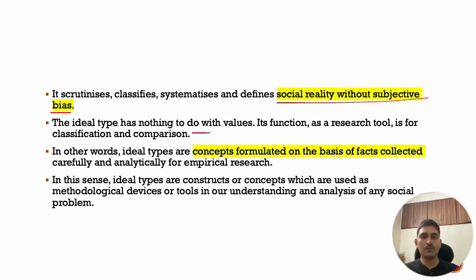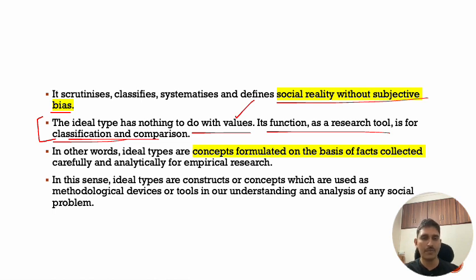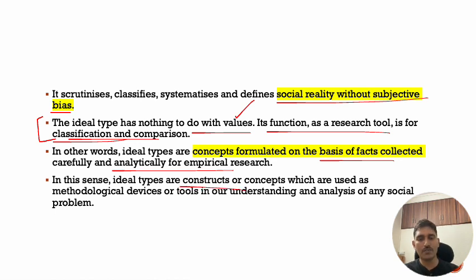Ideal types are helpful in scrutinizing, classifying, systematizing, and defining social reality without subjective bias. The ideal type has nothing to do with values — although sociologists carry their values, those values have no bearing on ideal types. Its function as a research tool is for classification and comparison. Ideal types are concepts formulated on the basis of carefully and analytically collected facts for empirical research. They are constructs used as a methodological device in understanding and analyzing any social problem.